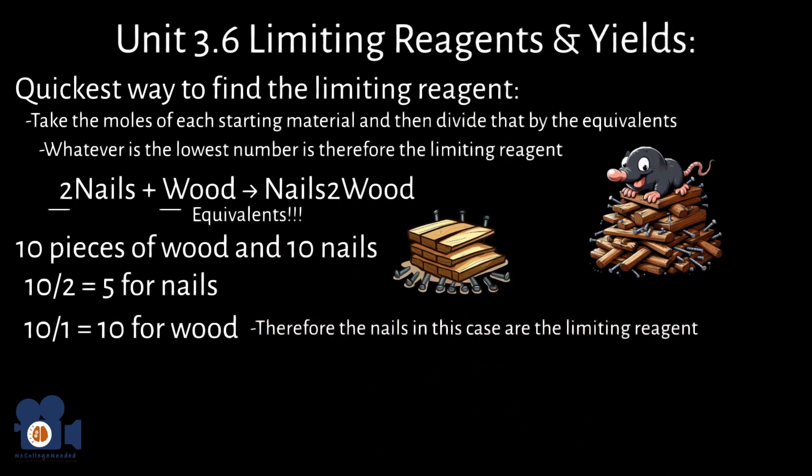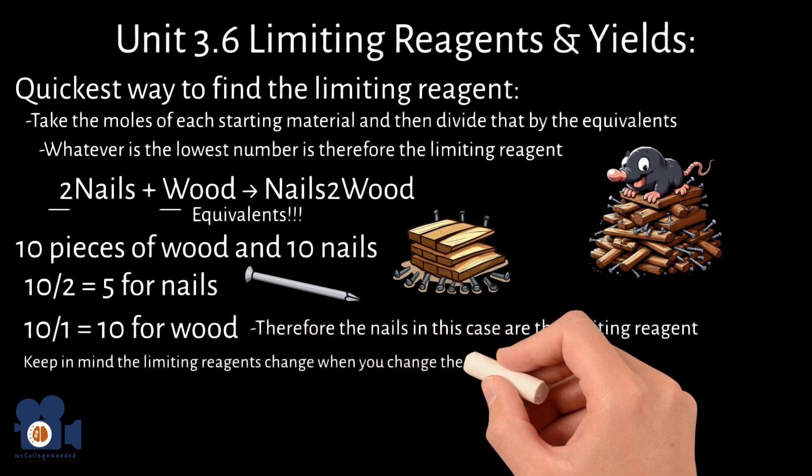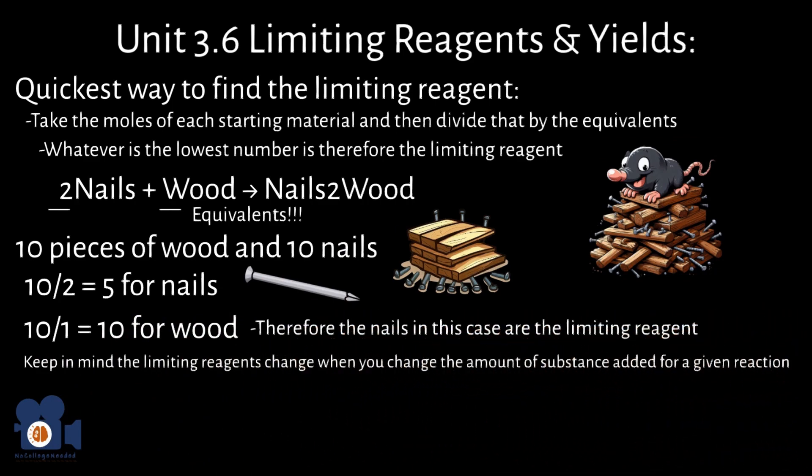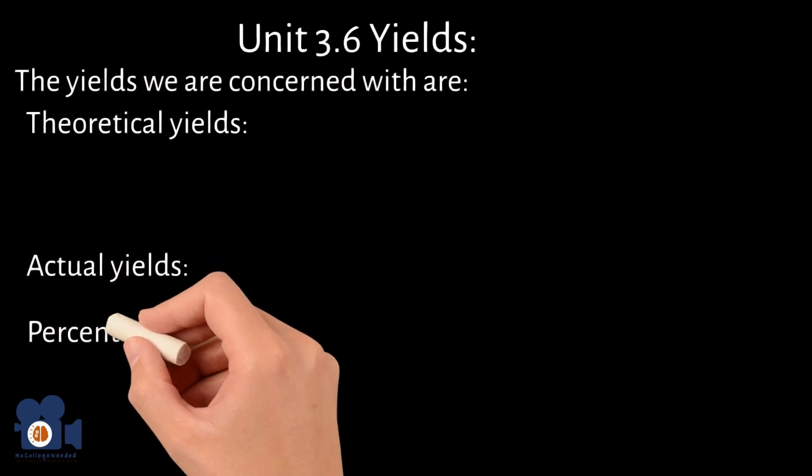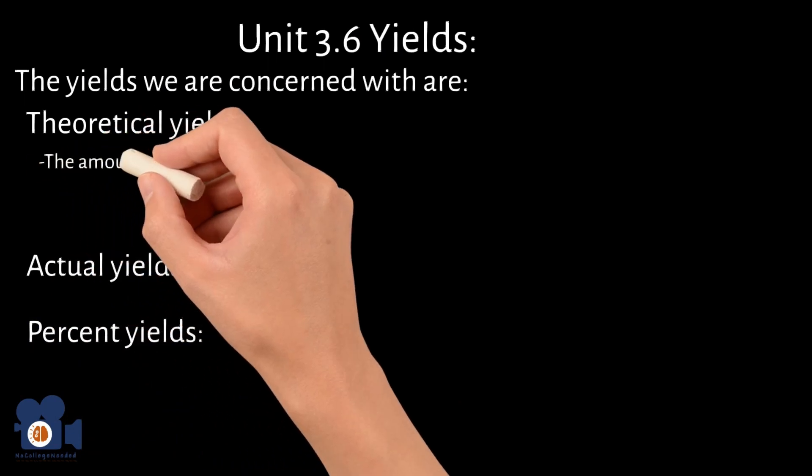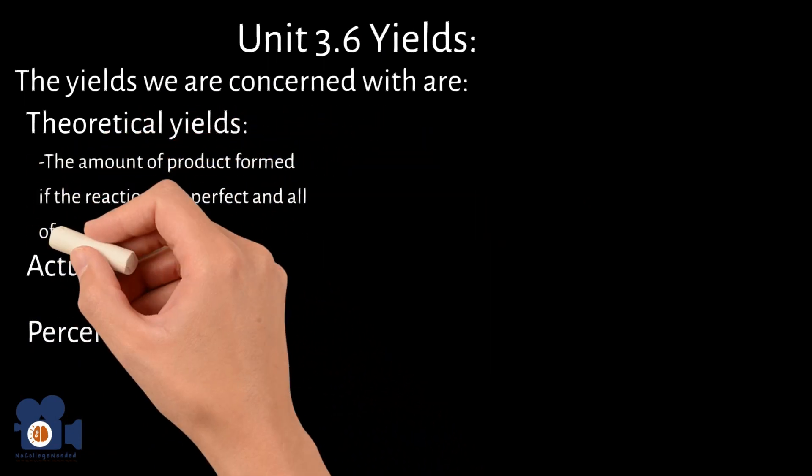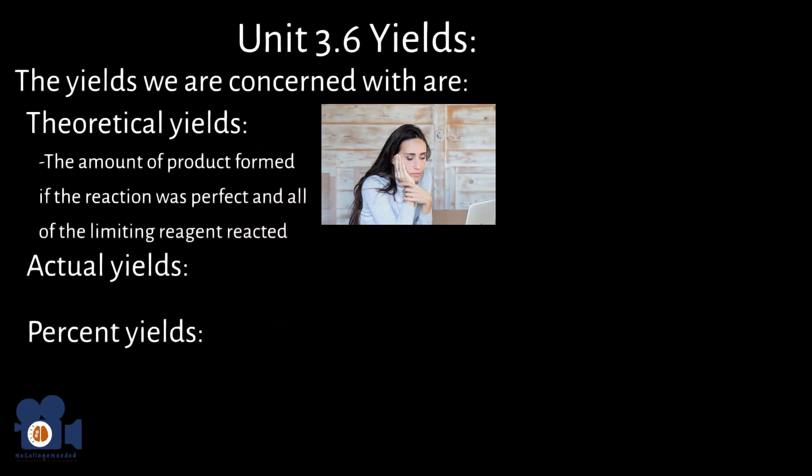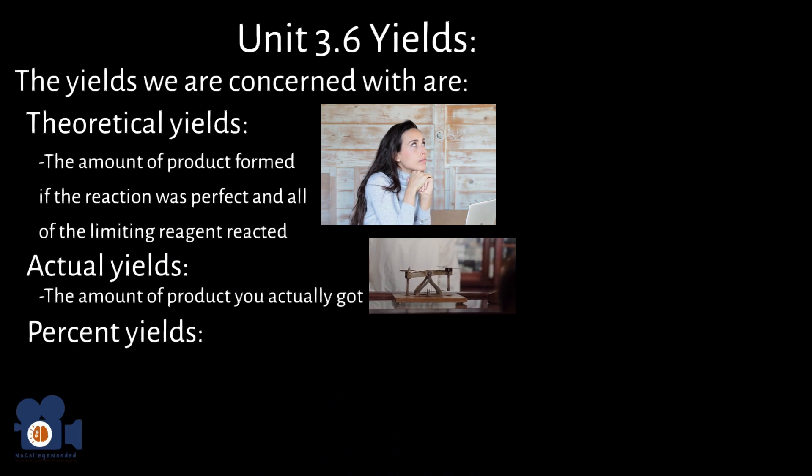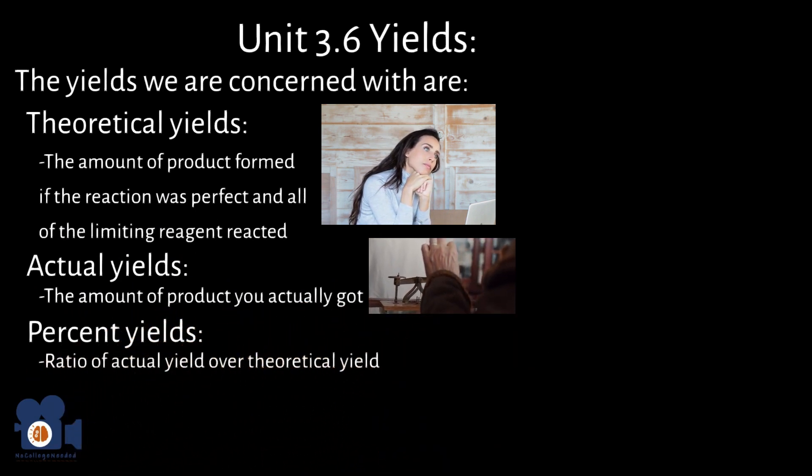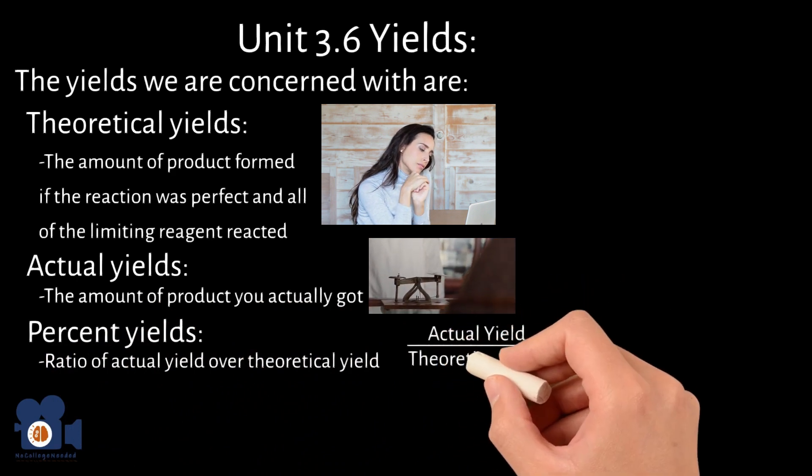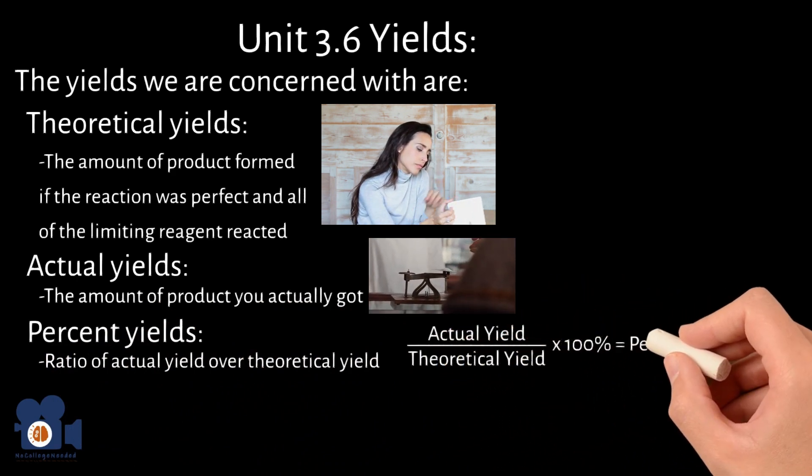Keep in mind the limiting reagents change when you change the amount of substance added for a given reaction. This leads us into yields, and the yields we are concerned with are theoretical yields, actual yields, and percent yields. The theoretical yield is the amount of product formed if the reaction was perfect and all of the limiting reagent reacted. The actual yield is the amount of product you actually got, and the percent yield is the ratio of actual yield over theoretical yield as such: Actual yield divided by theoretical yield times 100% equals percent yield.